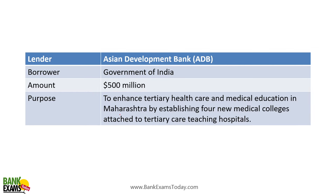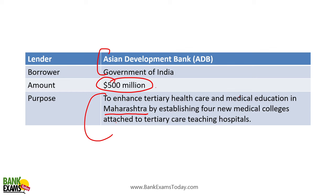Asian Development Bank again lent money to Government of India — 500 million dollars to enhance tertiary health care and medical education in the state of Maharashtra by establishing 4 new medical colleges. So 4 medical colleges and a budget of 500 million dollars was borrowed from Asian Development Bank.